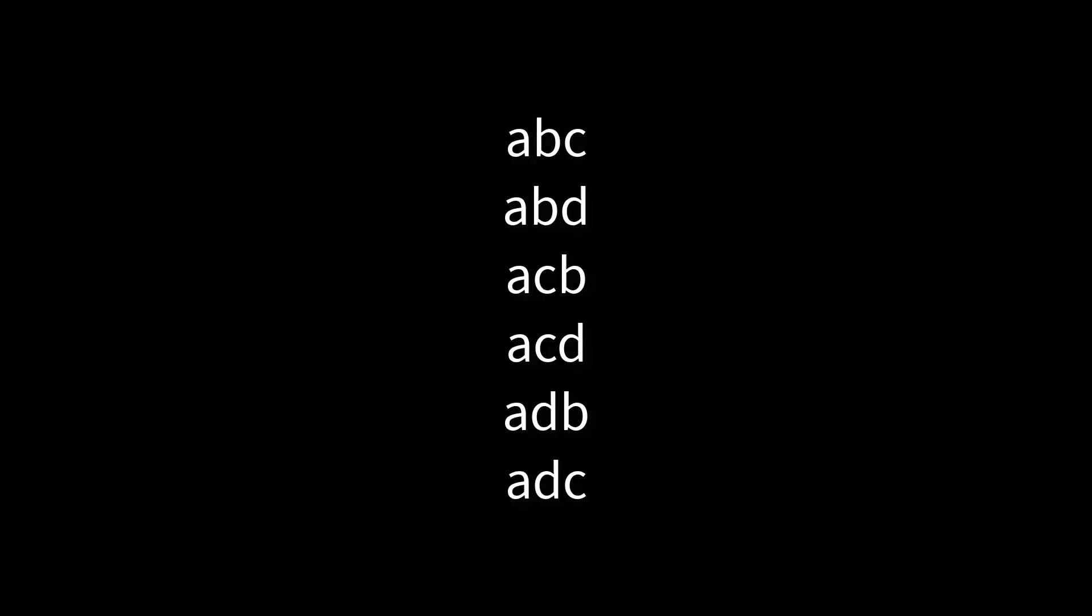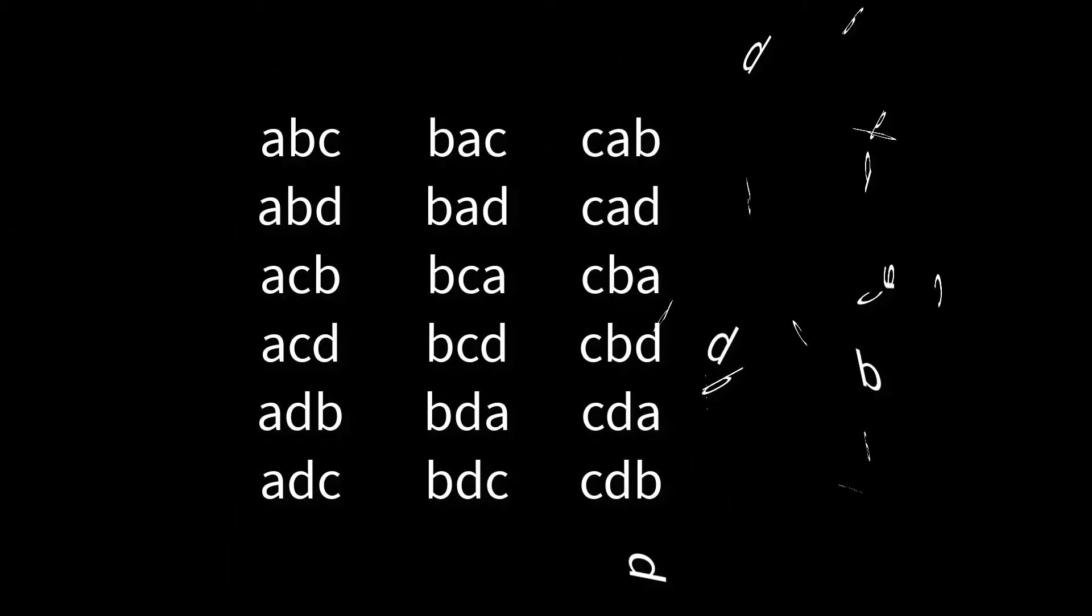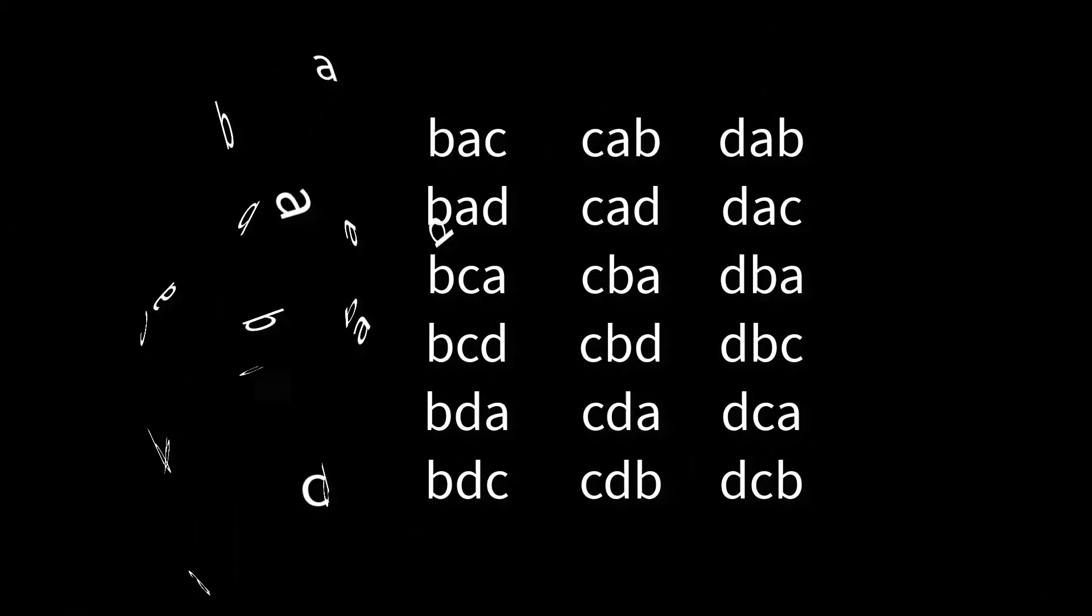There are six beginning with A. With hardly any more work, you can say there will be four lots of six in total because there are four possible first letters. Analogy does the rest.